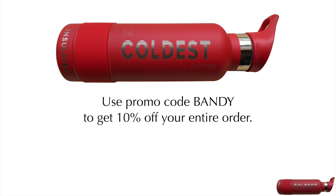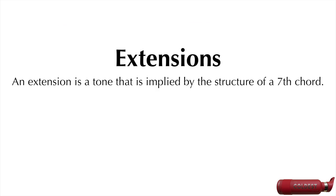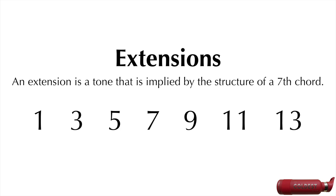Alright, let's get into the series. The third feature of a chord is the extensions. An extension is a tone that is implied by the structure of a 7th chord. A 7th chord has four tones: 1, 3, 5, and 7. We are simply listing off the odd integers. If we keep going up, we get 9, 11, and 13. These three tones are the first three extensions.